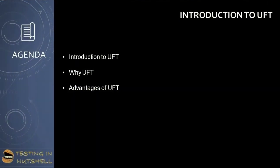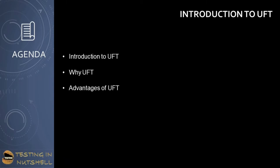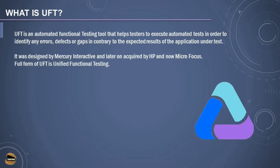As a part of this tutorial we will be understanding the introduction to UFT, why UFT is important, and what are the advantages of UFT as an automation testing tool. UFT, which stands for Unified Functional Testing, is basically an automated testing tool which is going to help you to automate your test cases, reduce your repetitive tasks, and reduce manual interaction and effort required in testing. UFT is used for functional and regression testing but does not allow non-functional testing — though that cannot be called a limitation since each tool is meant for a specific reason. It helps testers execute automated tests to identify any errors, defects, or gaps contrary to the expected results of the application under test.